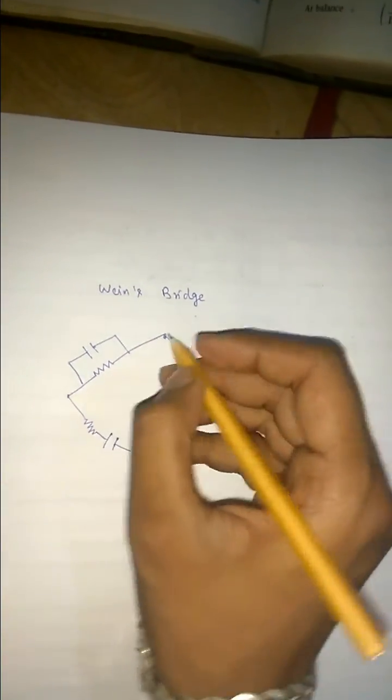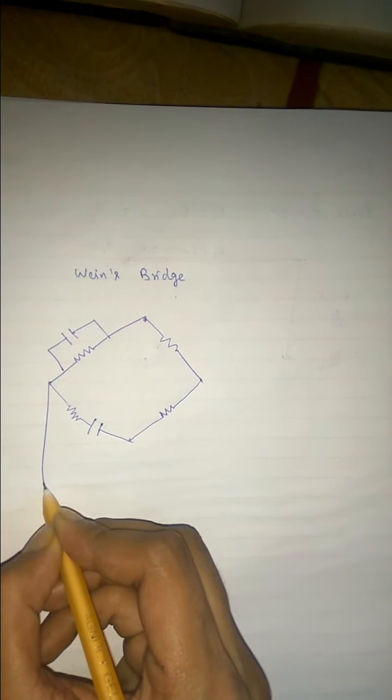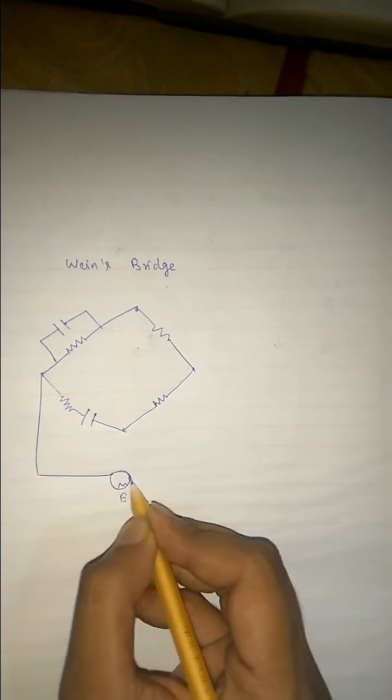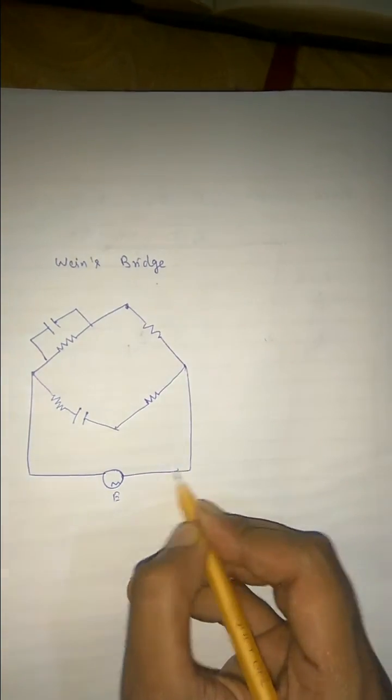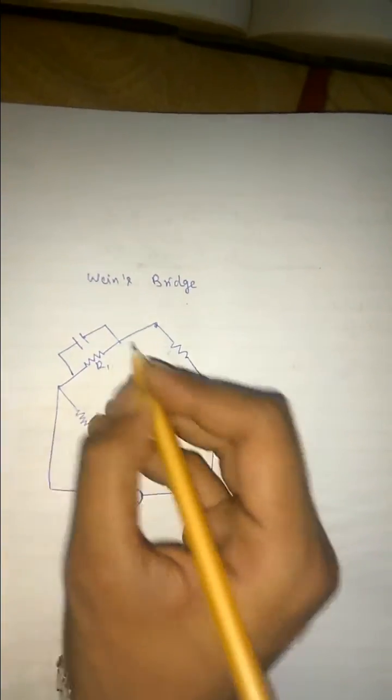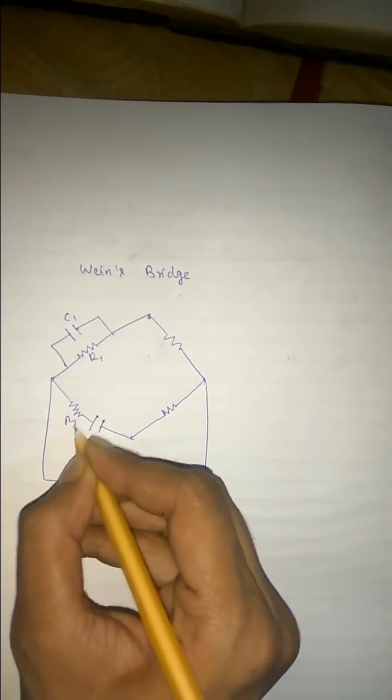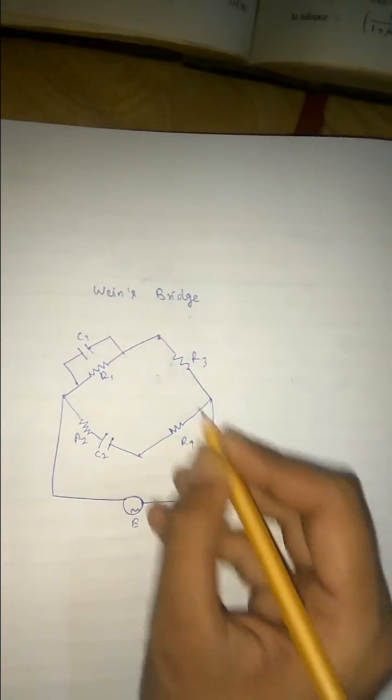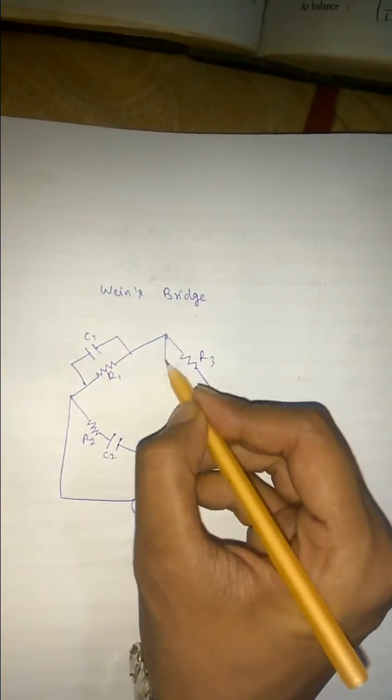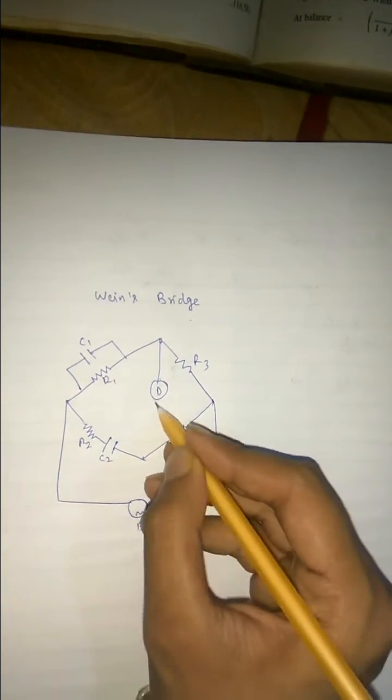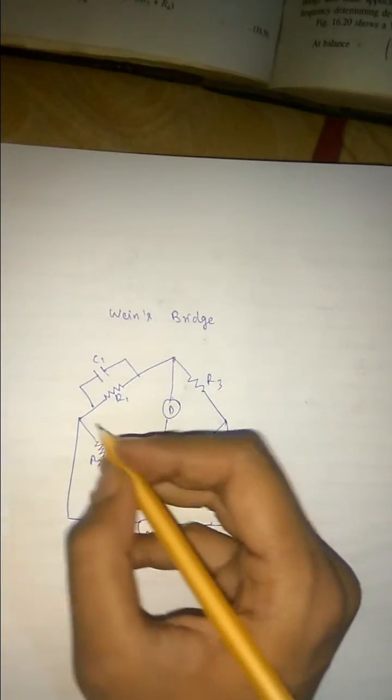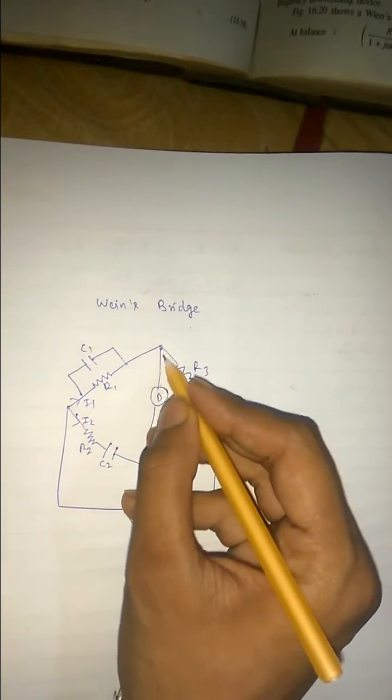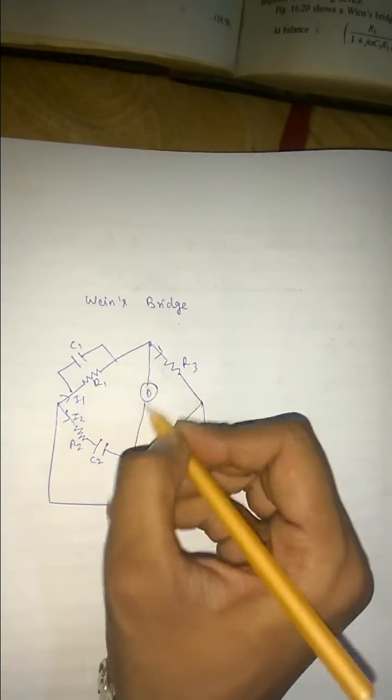So this is our Wien's Bridge. This is our R1, C1, R2, C2, R3, R4. And this is our deflector. i1 current goes from here, i2 current goes from here. At balanced condition, no current flows from here.